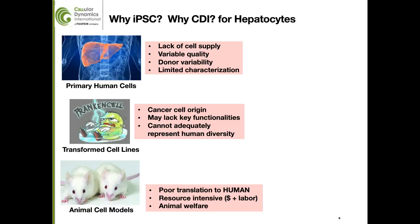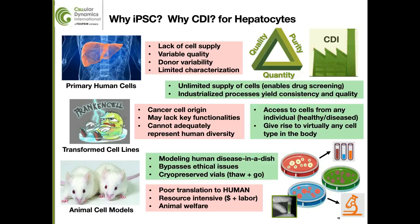Why iPSC? One clear advantage is that it offers an unlimited and renewable source of hepatocytes from theoretically any individual donor. In addition, iPSC cells can give rise to virtually any cell type in the body. Since it is really unreasonable to expect hepatocytes — either iPSC-derived or primary — to gain mature functions in isolated monocultures on a flat 2D surface, co-culture or 3D scaffolds or bioengineered devices will likely be required to build a better in vitro liver model. It makes logistical sense to leverage the same donor iPSC line to make other cell types to populate such complex systems.